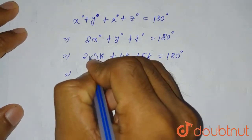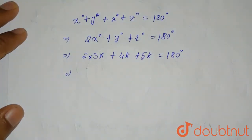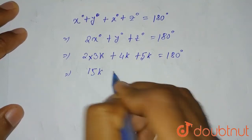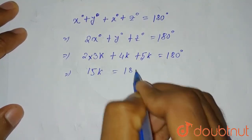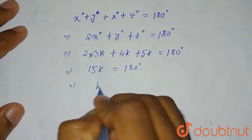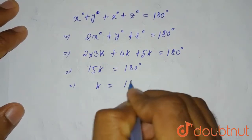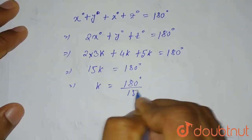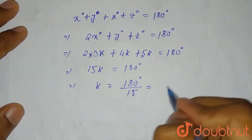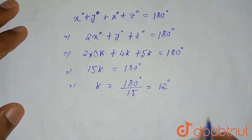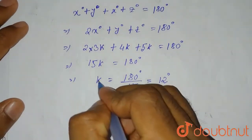From 15k = 180 degrees, we find k = 180/15 = 12 degrees.